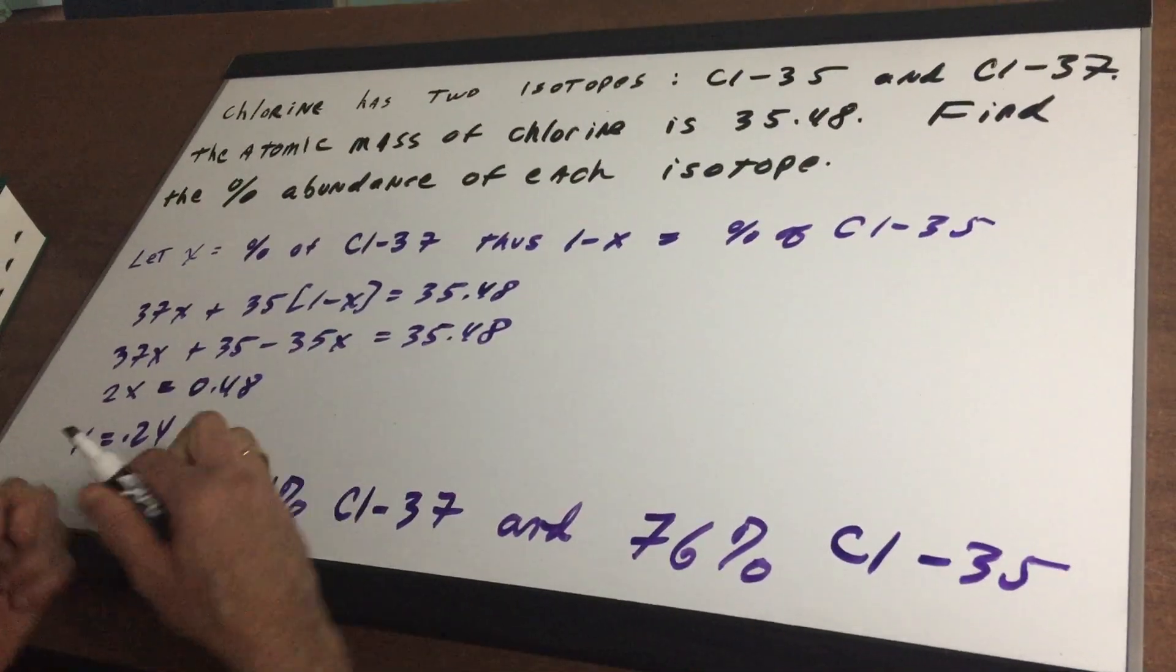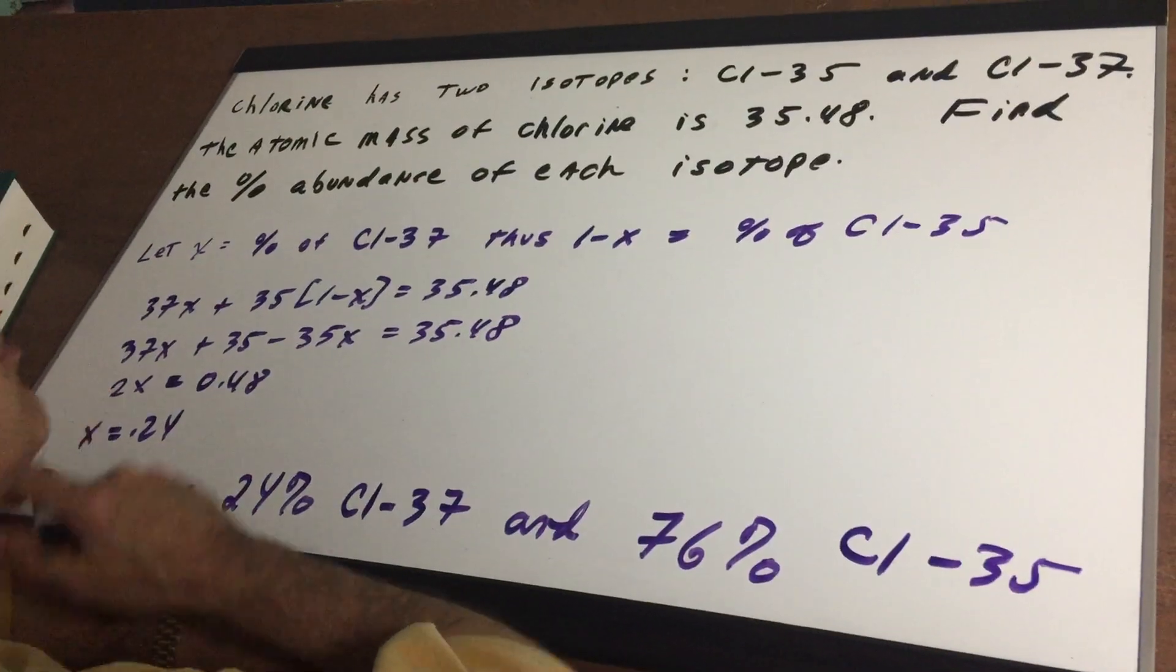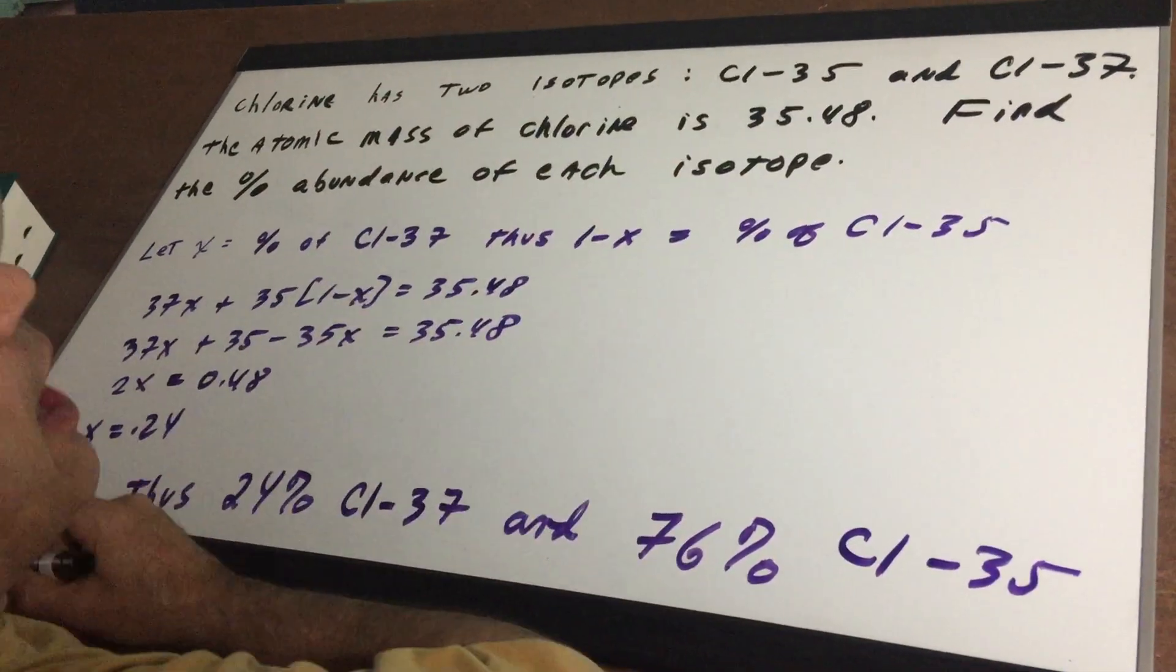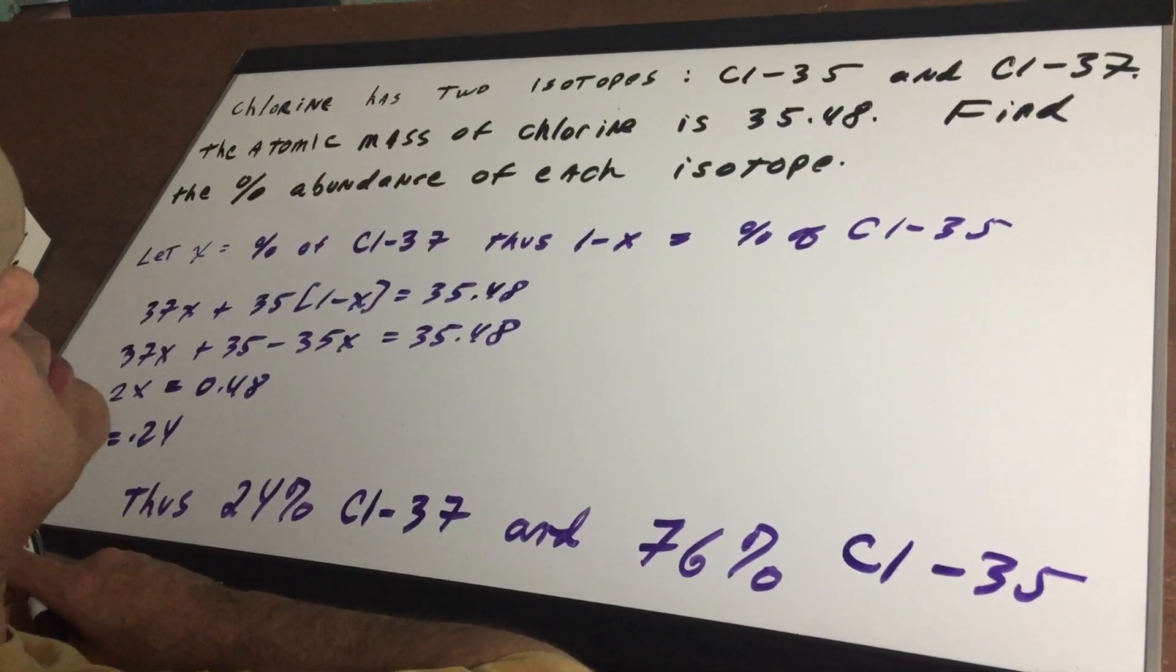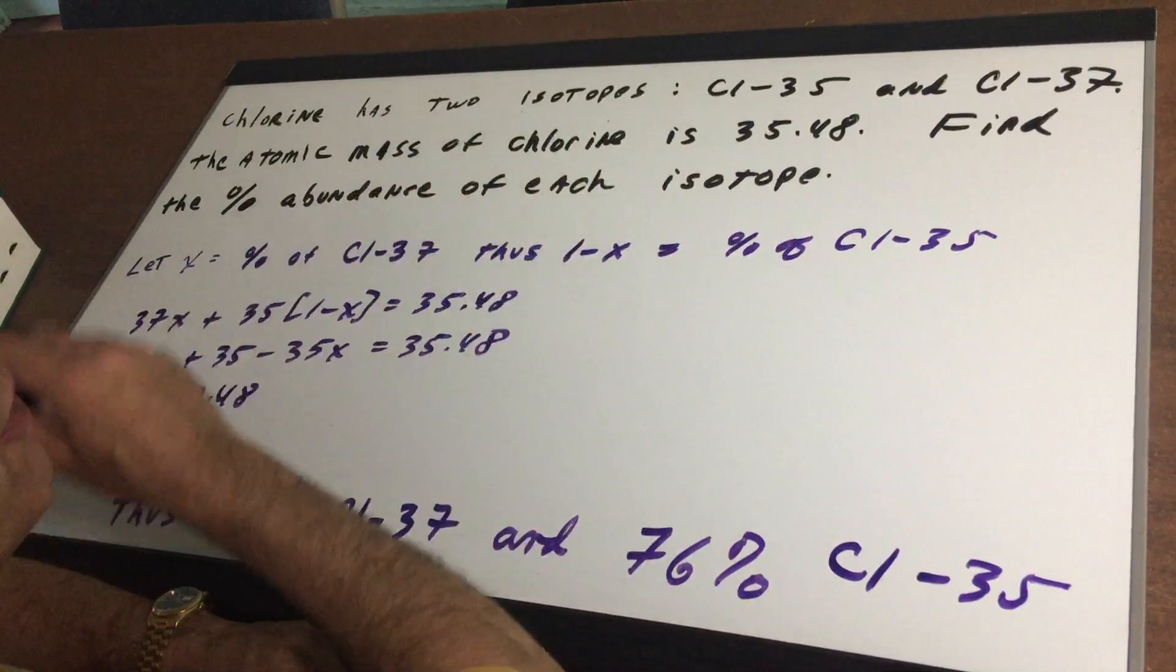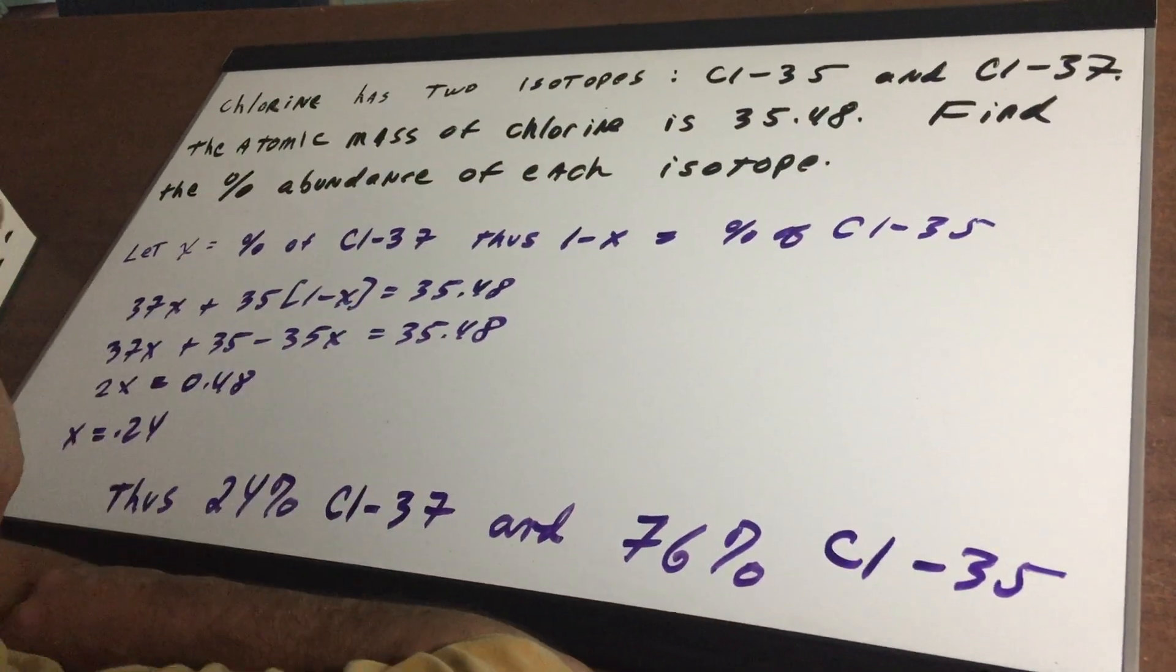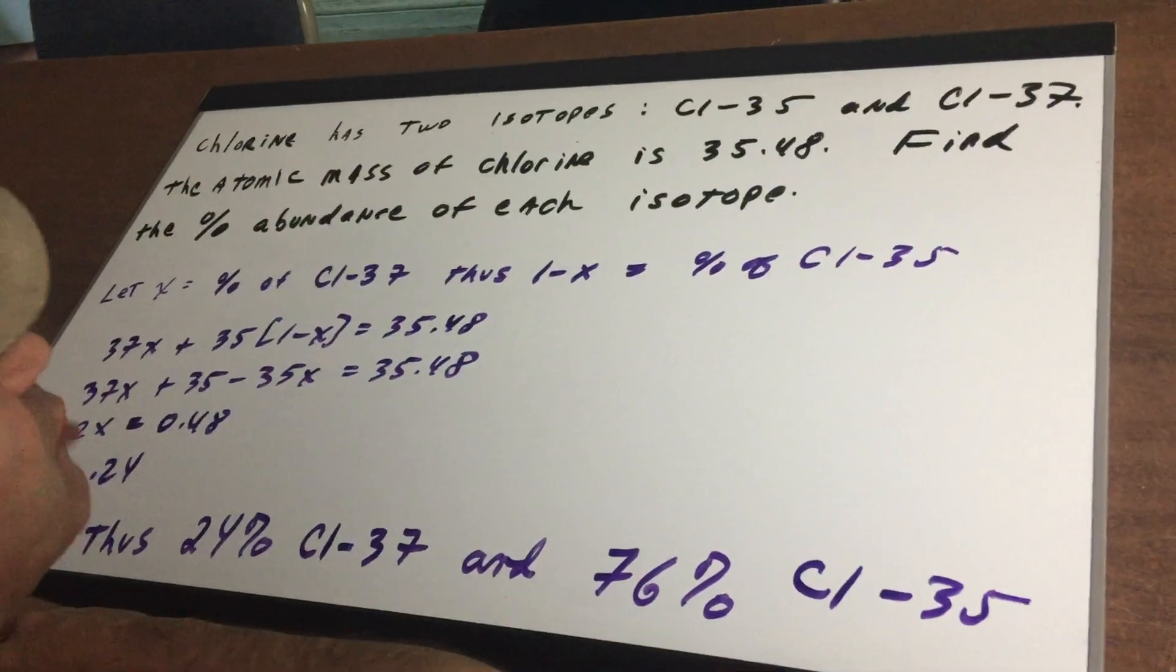Now in this challenge problem, I see you that chlorine has two isotopes. We have Cl-35 and the other weighs 37, and the atomic mass of chlorine if you looked it up on the table you'll see it's 35.48. And what I want to do is to find the abundance of each isotope.